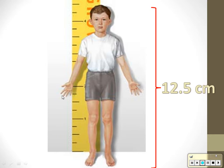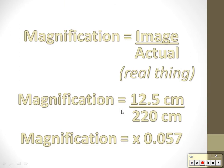That's the formula for magnification. Let's say I measured a picture of a boy at 12.5 centimeters. Then I go to the wall and measure myself in real life at 220 centimeters. I can work out the magnification using the formula: image over actual. So 12.5 divided by 220 gives a magnification of 0.057. Anything larger than 1 means you made the picture bigger; anything smaller than 1 means the picture is smaller than the real thing.